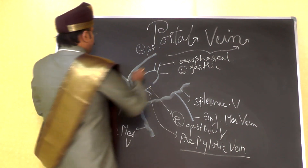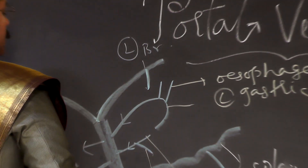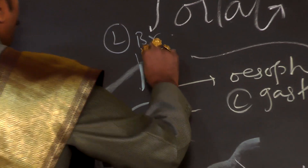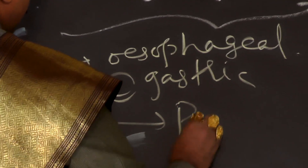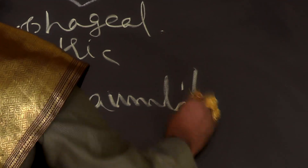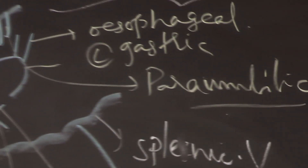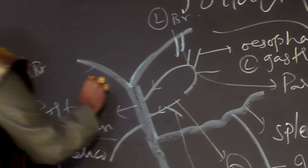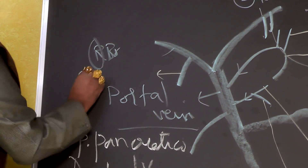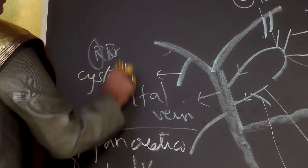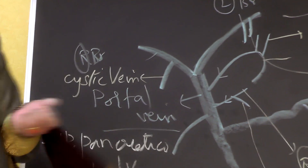Coming to the left branch of the portal vein, you have the opening of the para-umbilical veins. So the para-umbilical veins are opening into the left branch of the portal vein. Into the right branch of the portal vein, we have the cystic vein, which is opening into the right branch of the portal vein.